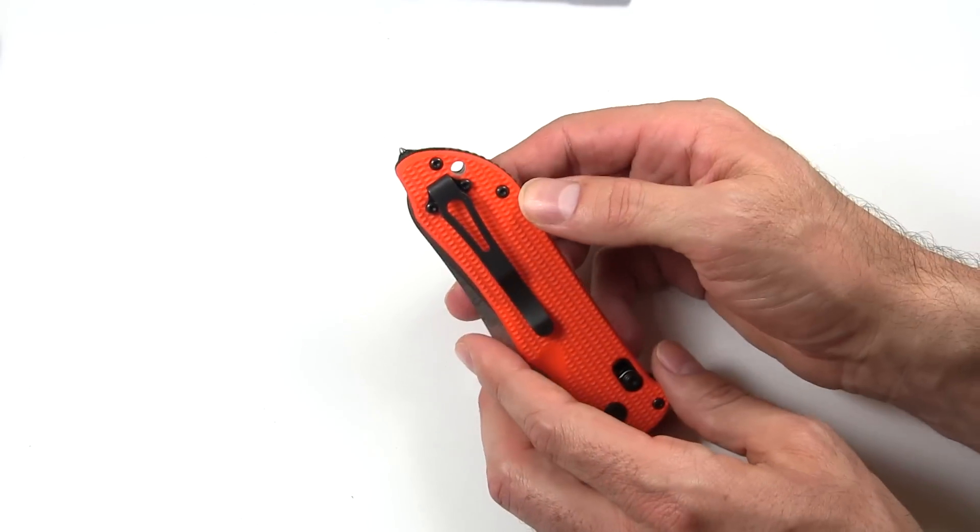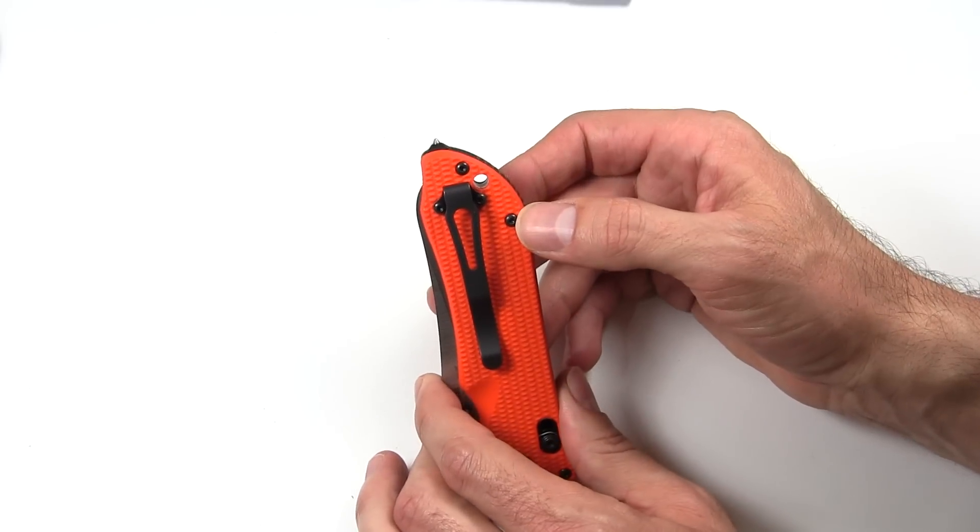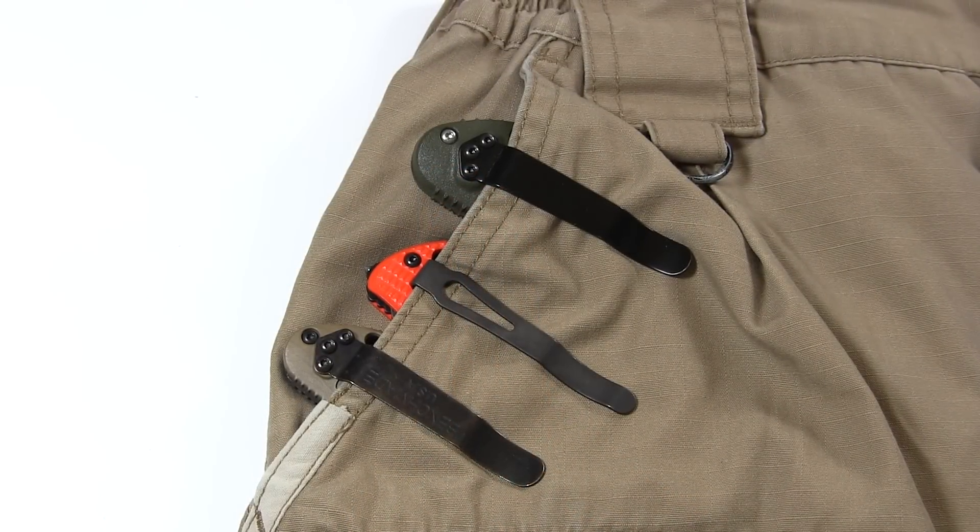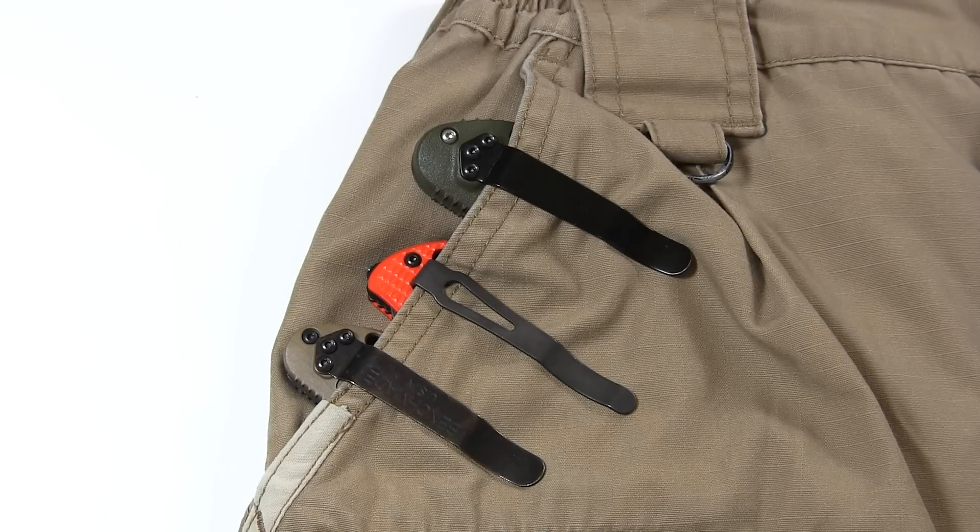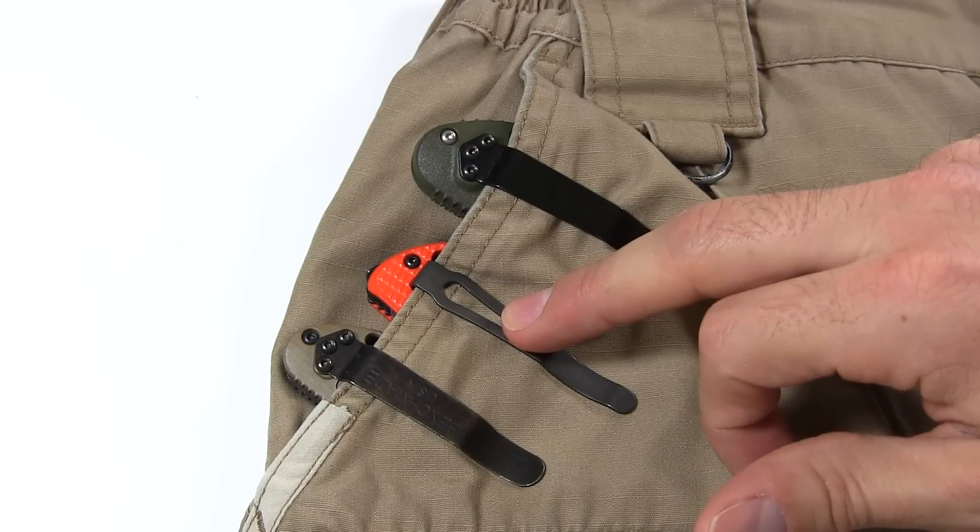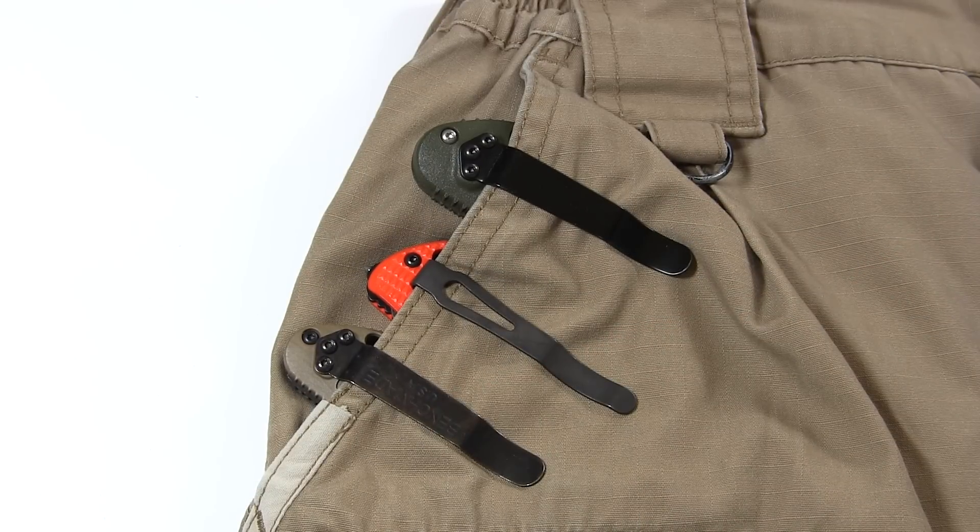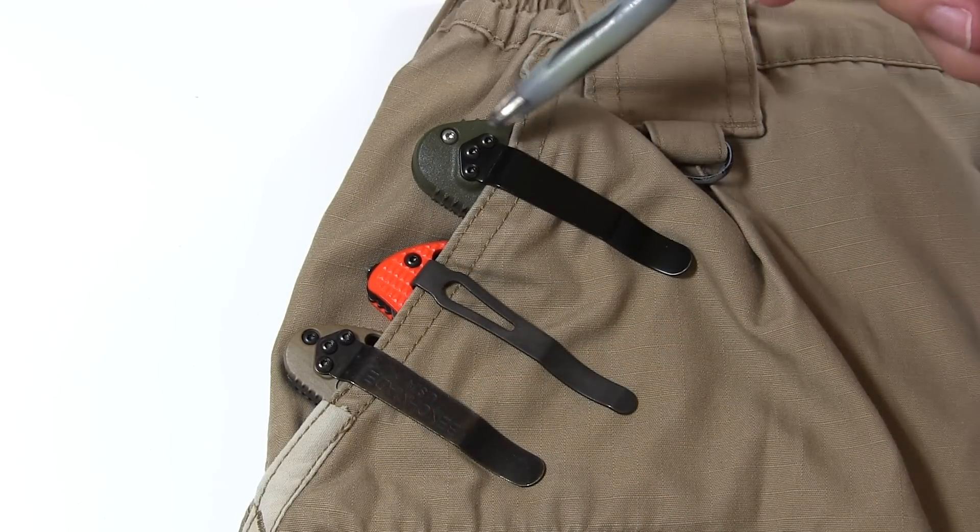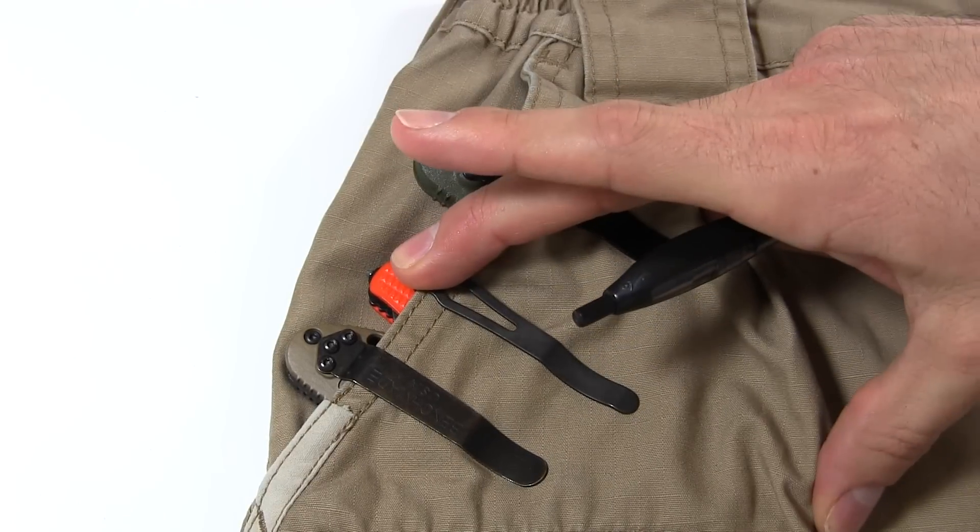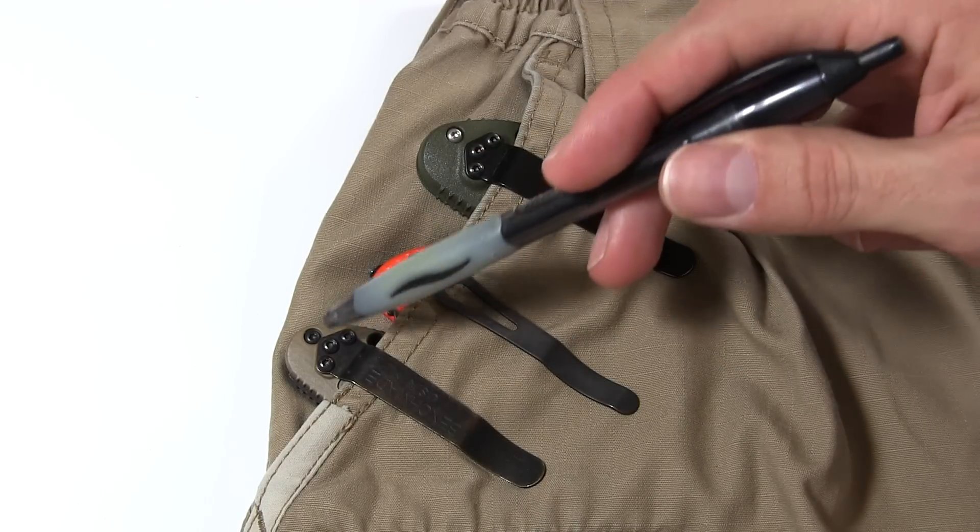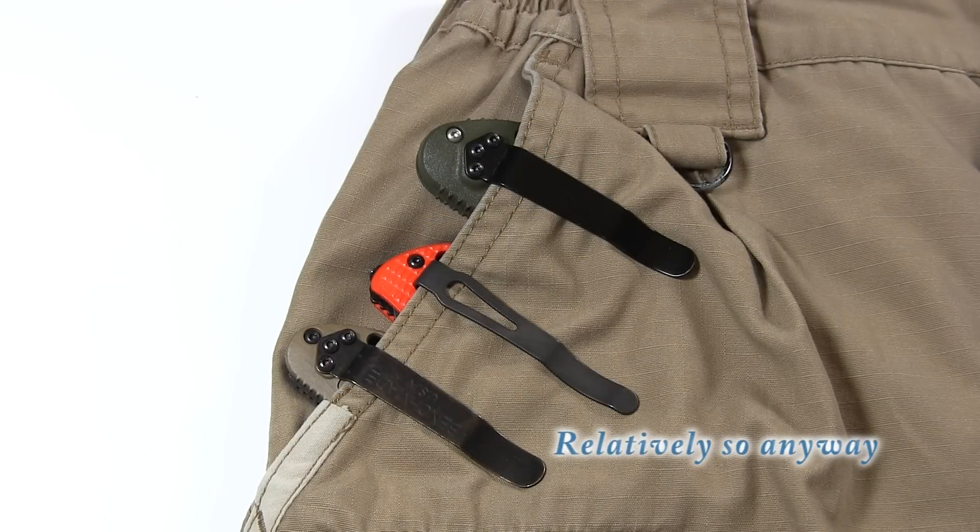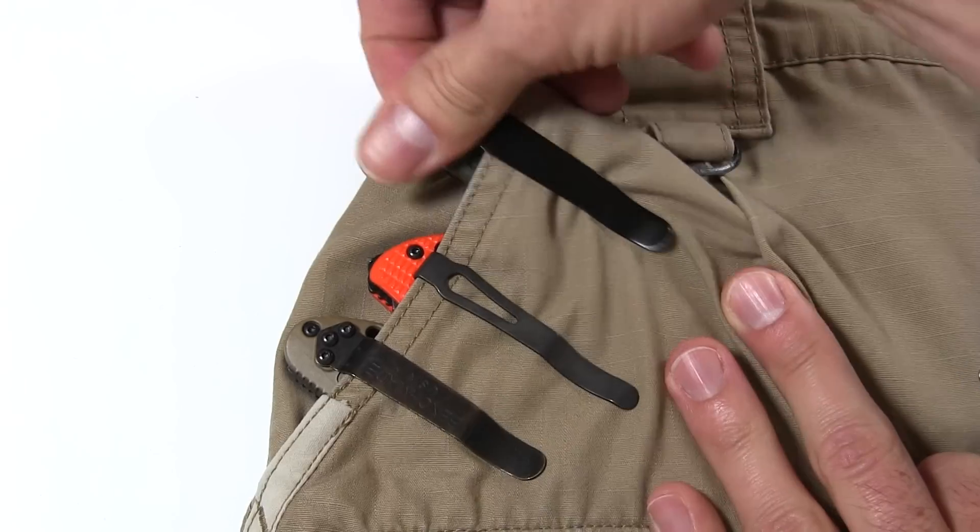But anyway, pocket clip, they call this their deep carry pocket clip. And I initially, I didn't really think it was. Well, I'll go ahead and put the knives in a pocket of these 511 pants. So you can kind of get an idea of how just deep carry the pocket clip is. So this is a full size Griptilian. This is the 915 triage. And this is a mini Griptilian. And you can see that, you know, despite this, the triage being a really big knife, it goes all the way down to here, the mini Griptilian actually rides a lot higher in the pocket. So this actually does have quite a deep carry pocket clip.